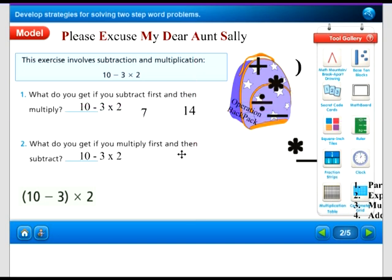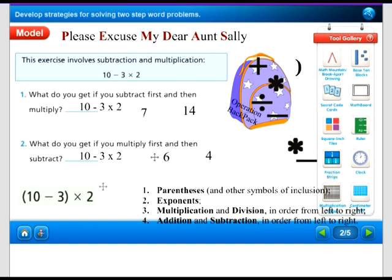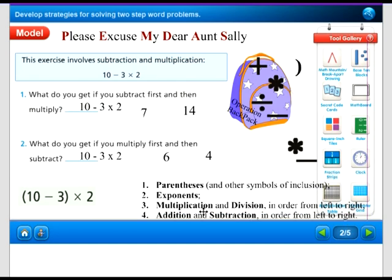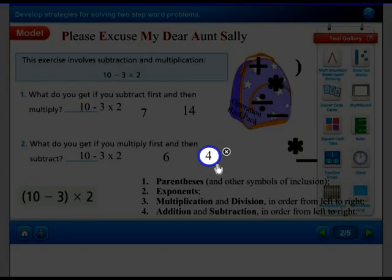Now let's see what would happen if you multiply first and then subtract. 3 times 2 is 6, 10 minus 6 equals 4. So which one of these is correct? If we do the order of operations, we're going to do parentheses first, then multiplication and division, then adding and subtraction. If we looked at this, we did multiplying first and then we subtracted. So we followed this order. Our answer should be 4.